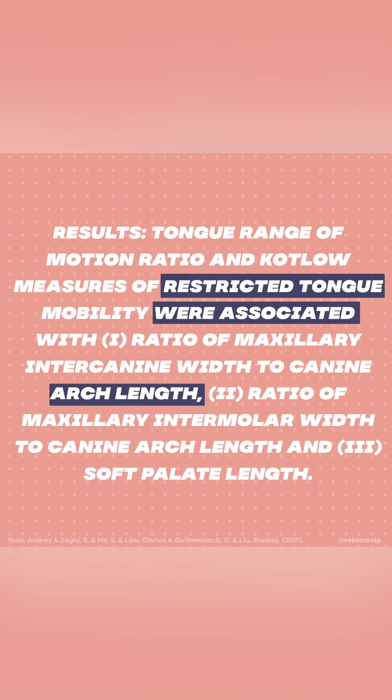Results: tongue range of motion ratio and Kotlow measures of restricted tongue mobility were associated with: 1. ratio of maxillary intercanine width to canine arch length, 2. ratio of maxillary intermolar width to canine arch length, and 3. soft palate length.